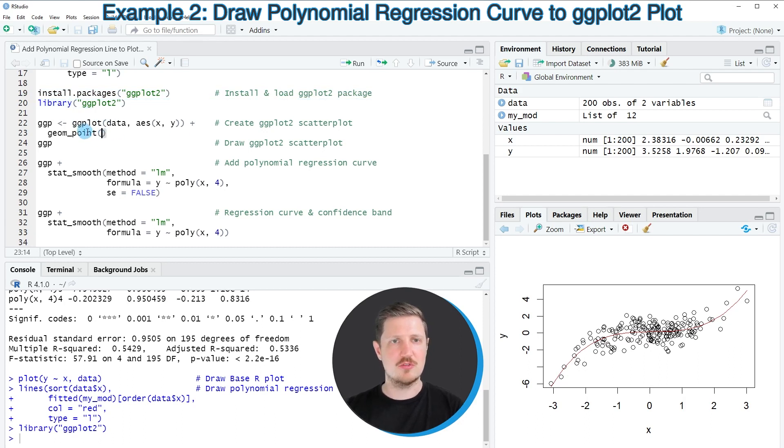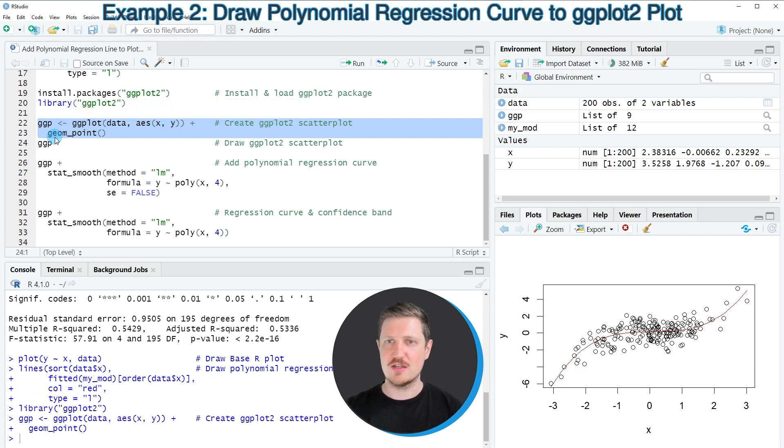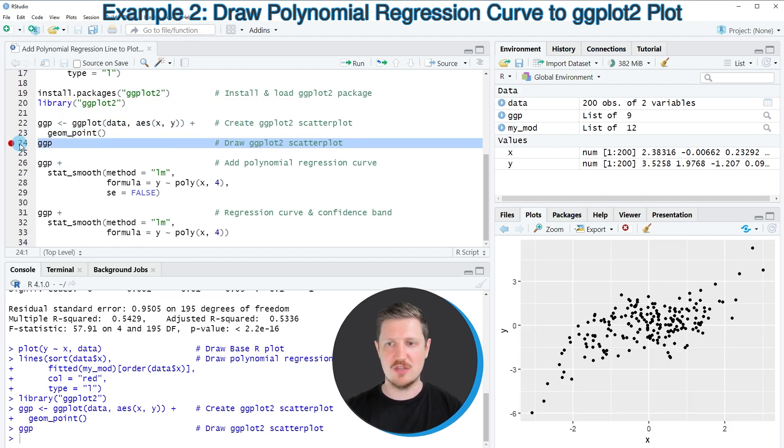And after running this line of code, we can create a ggplot2 scatterplot using the ggplot and geom_point functions as you can see in lines 22 and 23. So after running these lines of code, a new plot object called ggplot is appearing at the top right and we can draw this plot to the bottom right by running line 24 of the code.